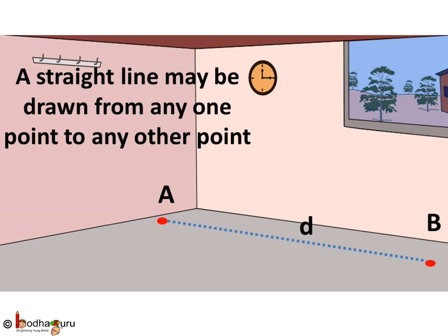Euclid said a straight line may be drawn from any one point to any other point. It's a postulate and there cannot be more than one such line.